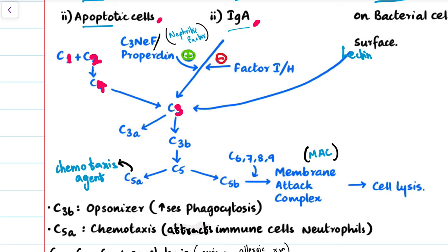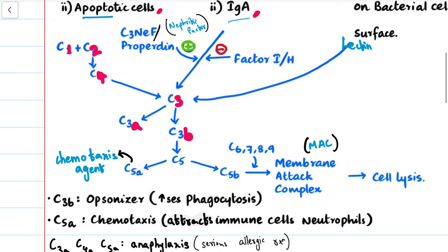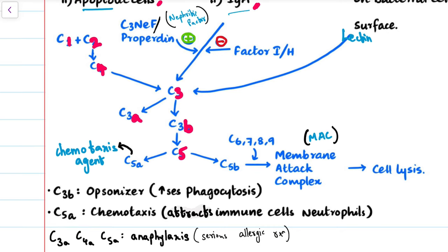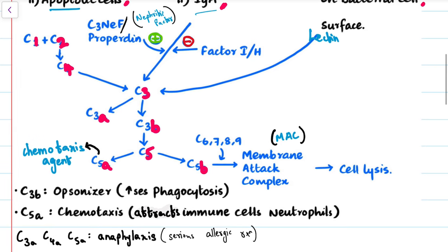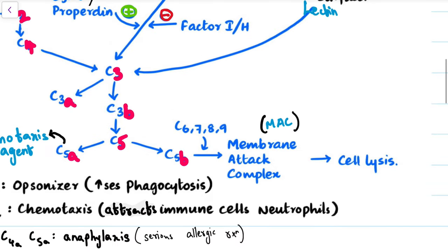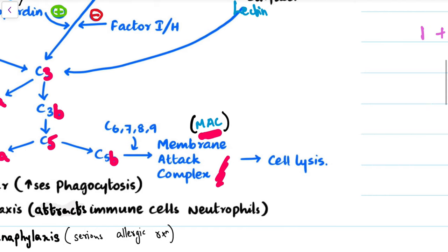Complement 3 divides into two parts: C3a and C3b. C3b is what we'll be focusing on. It goes and activates C5, and just like C3, C5 also divides into C5a and C5b. C5b, along with C6, C7, C8, and C9, together form the MAC or membrane attack complex. This causes cell lysis.